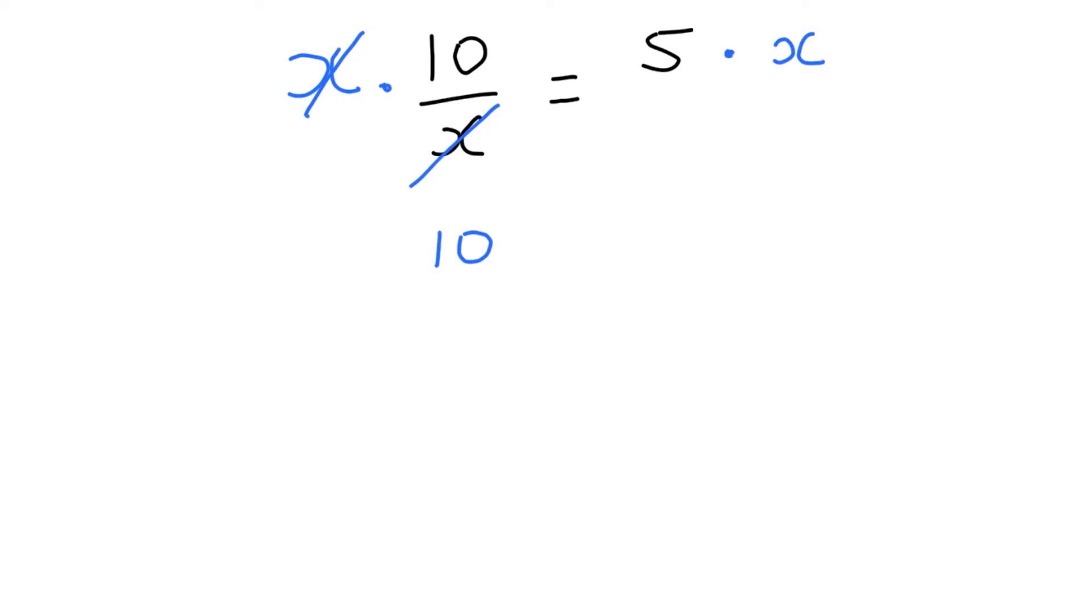On the left side I have 10 equals 5 times x, which is just 5x. I've actually solved my problem just by getting rid of that x in the denominator, and now it just happens to end up on the top on the right side, because 5x is really 5x over 1, so it is in the numerator on the right side.